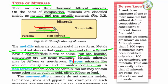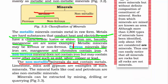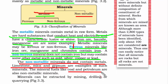Non-metallic minerals do not contain metals. Some examples are limestone, mica, and gypsum — they are not hard and don't contain any iron. Some mineral fuels such as coal and petroleum are also part of non-metallic minerals.